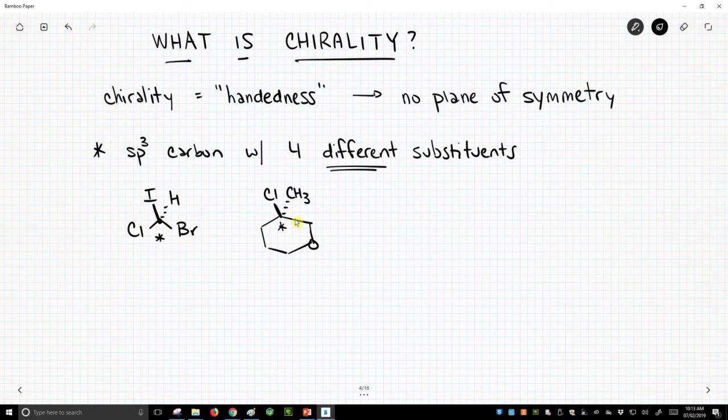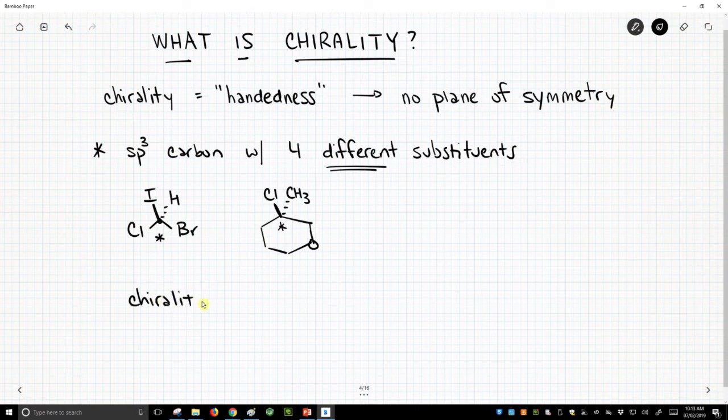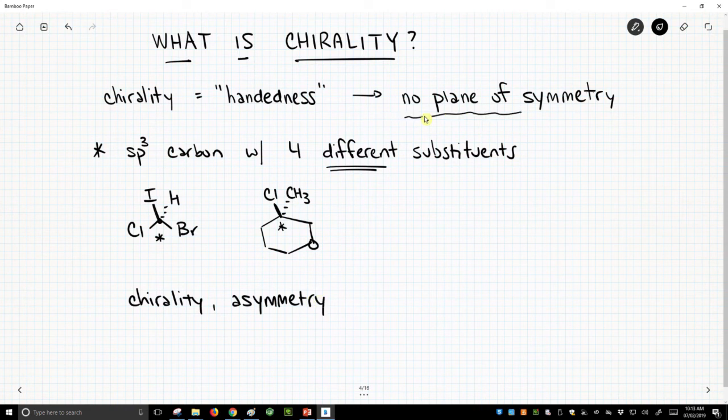There are a lot of terms we'll use almost interchangeably. We'll talk about chiral or chirality. We'll talk about asymmetry. So if we lack a plane of symmetry, we refer to these as asymmetric centers or carbons or asymmetric molecules. And then, of course,